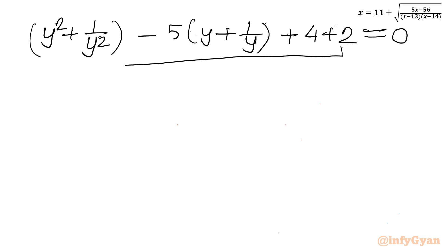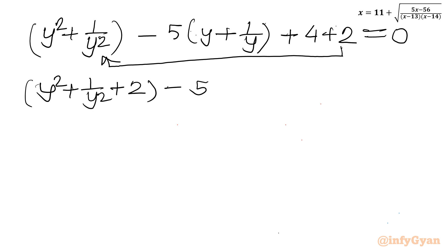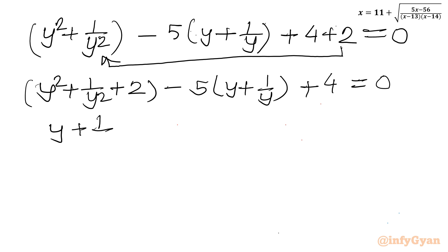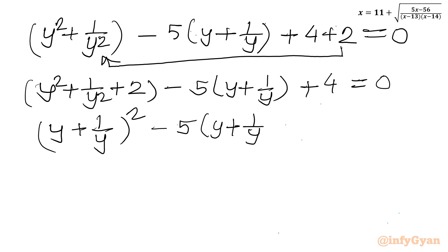And then we have 6, which I will write as 4 plus 2, equal to 0. I will take this 2 into the bracket. So I can write (y² plus 1/y² plus 2) minus 5 times (y plus 1/y) plus 4 equal to 0. Here I can write (y + 1/y) whole squared, since y² plus 1/y² plus 2·y·(1/y) equals that expression. So minus 5 times (y plus 1/y) plus 4 equal to 0.